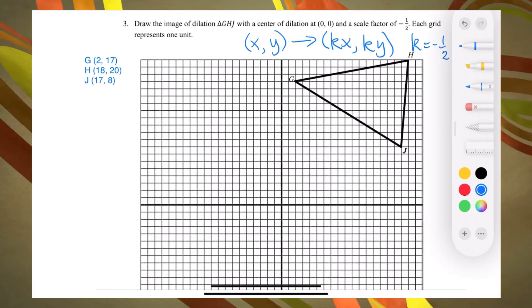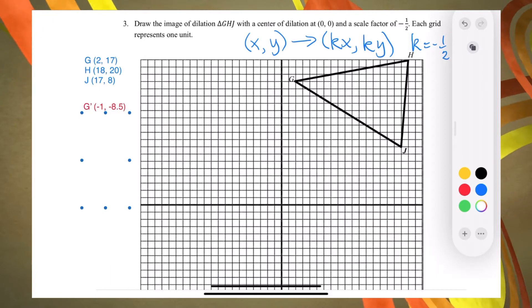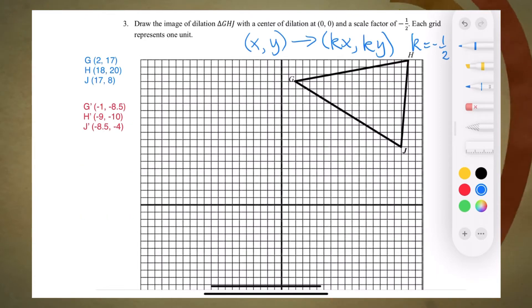Multiplying each coordinate by negative one-half, G' will be at negative one, negative eight point five, H' will be at negative nine, negative ten, and J' will be at negative eight point five, comma negative four.